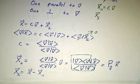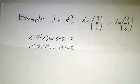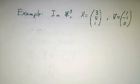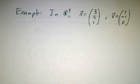And x-perp is whatever is left over. Okay, so let's work an example. In this example, we'll work in R3 with the usual inner product. And we'll take x to be (3, 5, 1) and v to be (1, -1, 0).